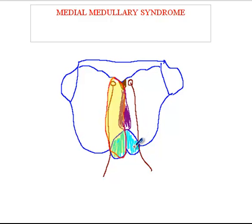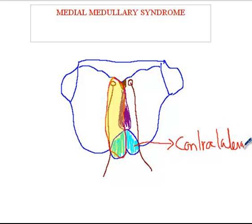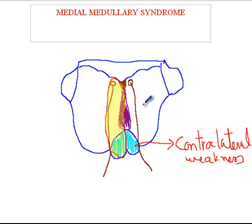If you have the corticospinal tracts involved, this would lead to contralateral weakness. This will only affect the arm and the leg. So for example, if this is the left side of the medulla and this is the right side, if you have a stroke that affects the right side, you will have a left-sided weakness.